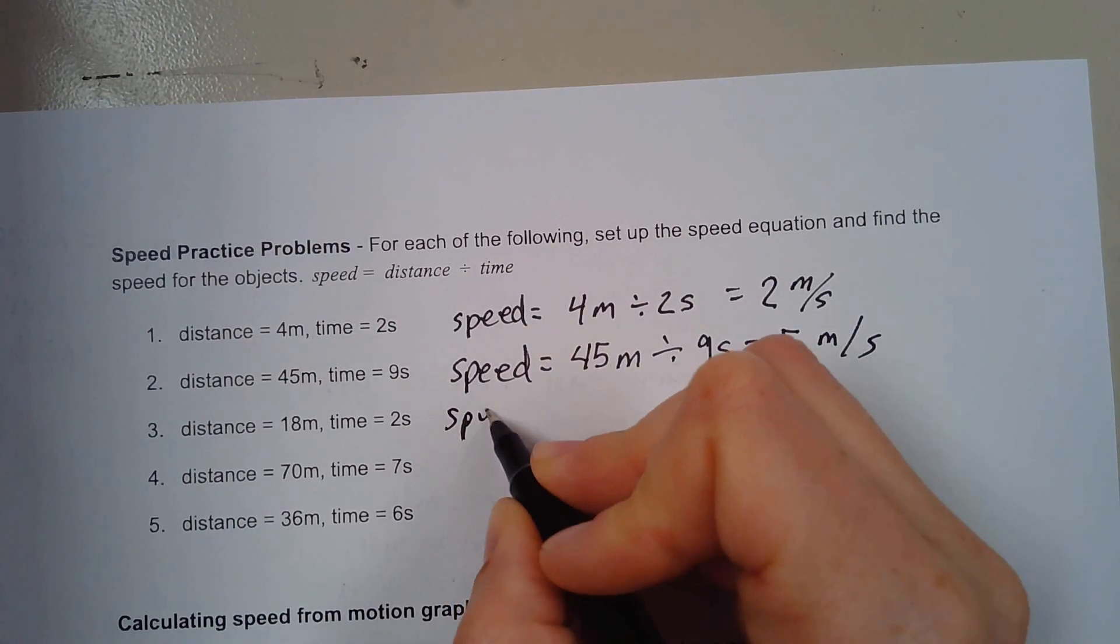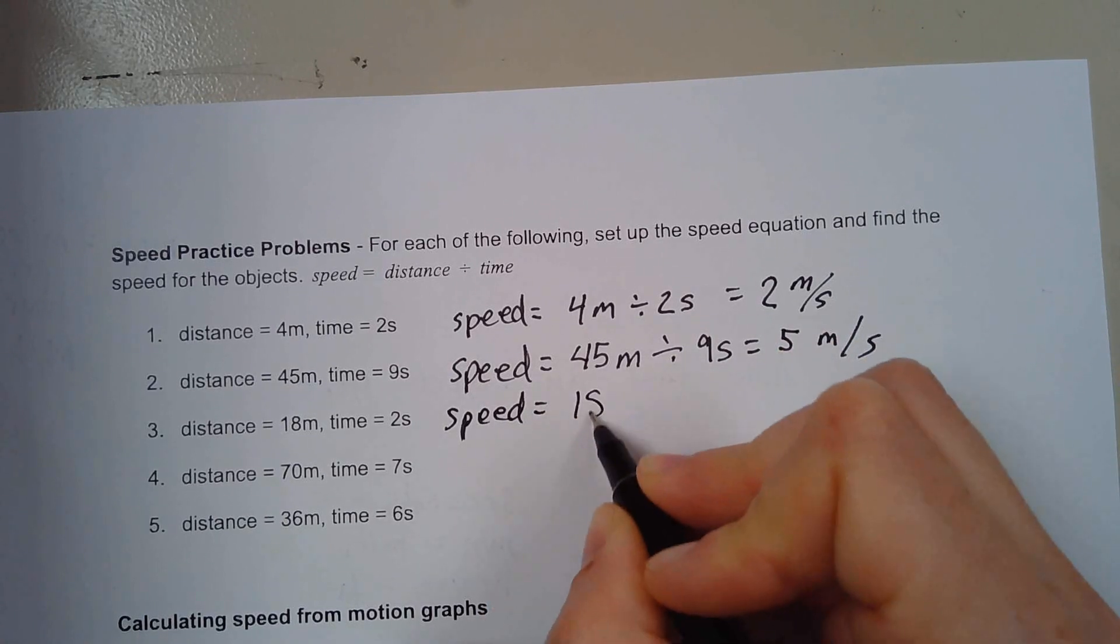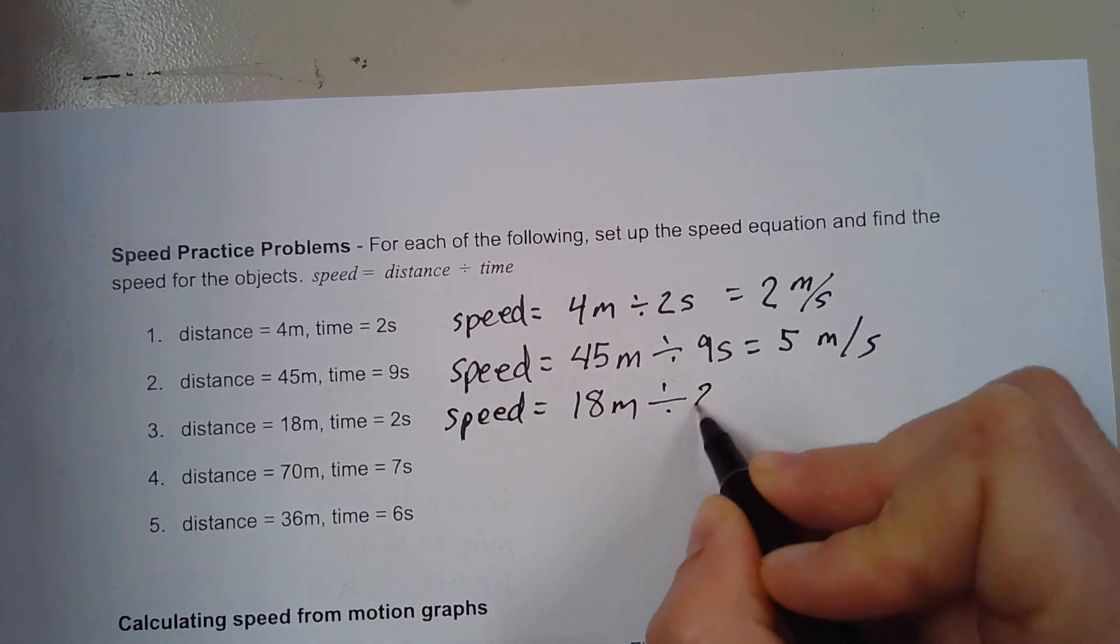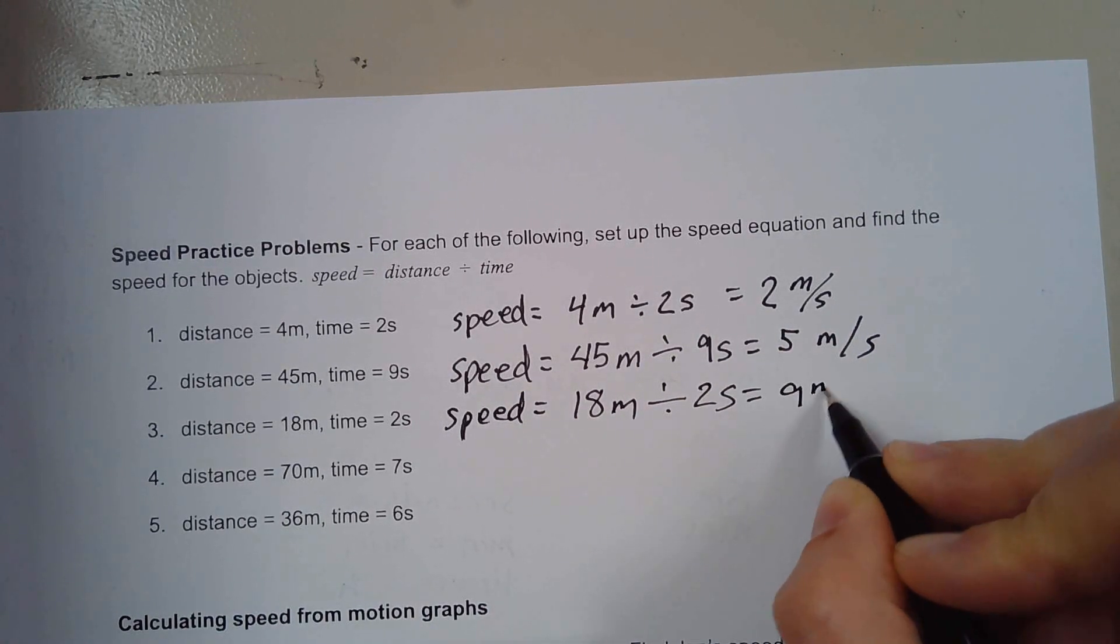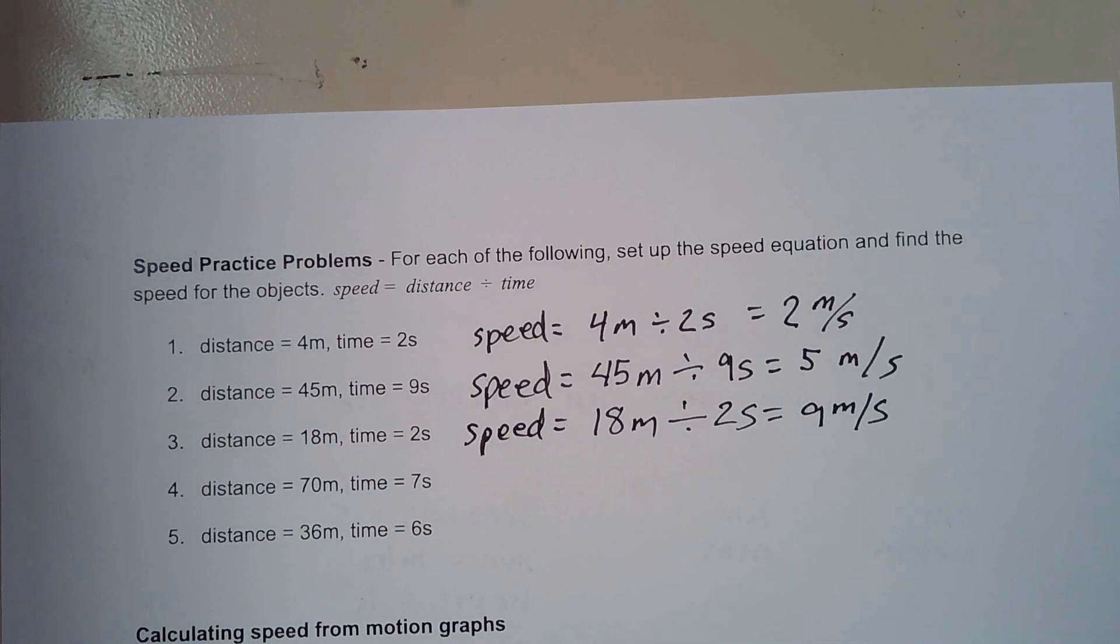Your speed equals 18 meters divided by two seconds, which is nine meters per second. And I'm going to ask you to show your work on these problems. You might be like, well, I can do 18 divided by two in my head. Great.